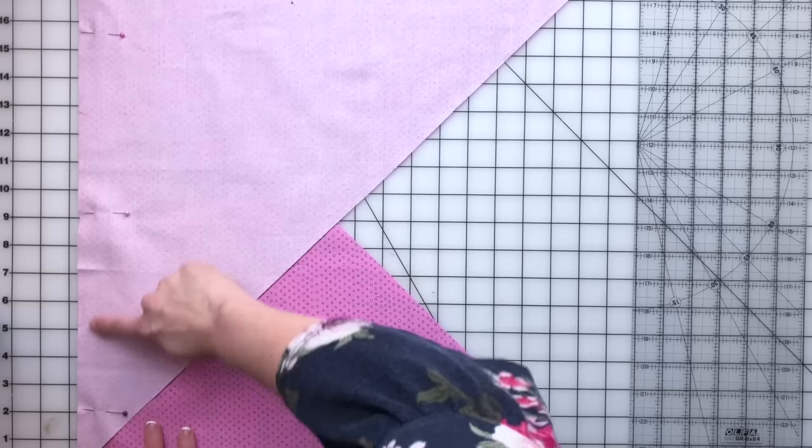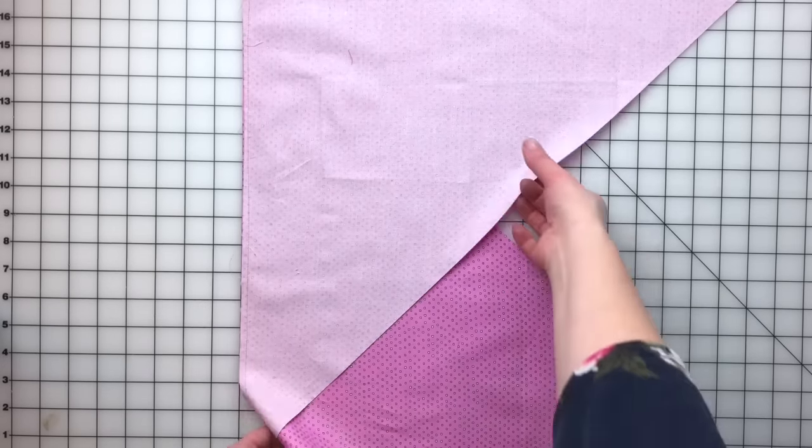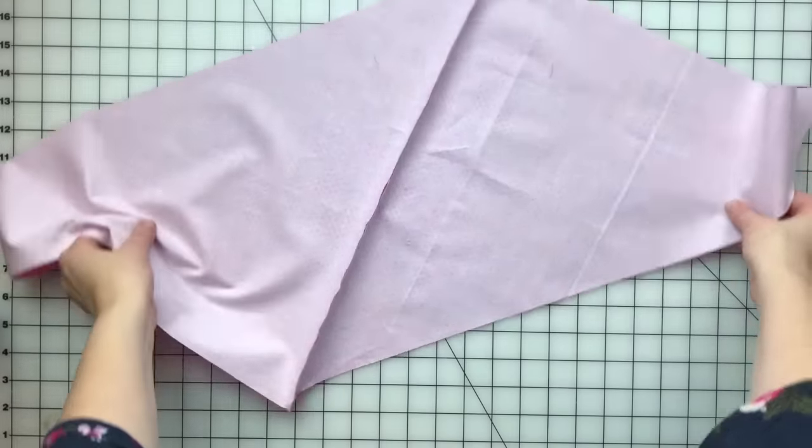Then I'm going to go ahead and sew this edge right here with a quarter inch seam allowance. When this seam is sewn, your piece will look like this.